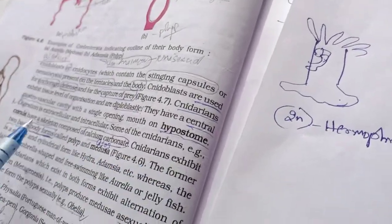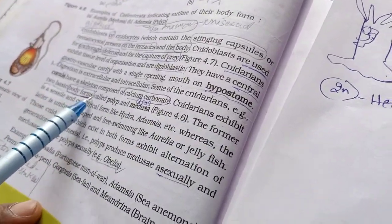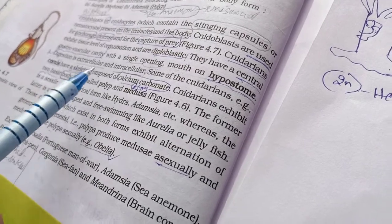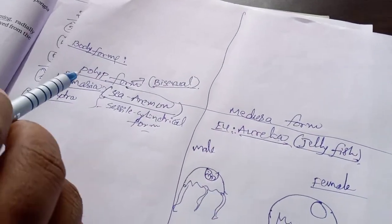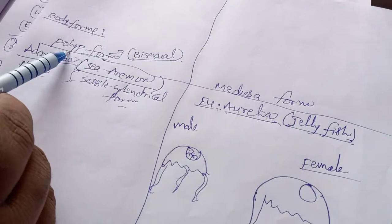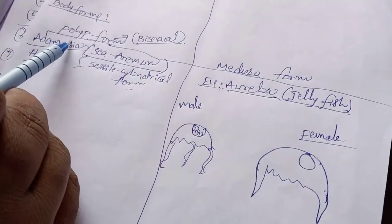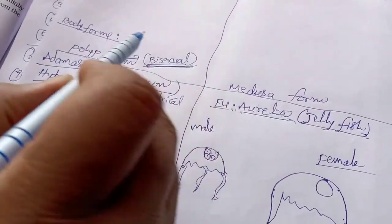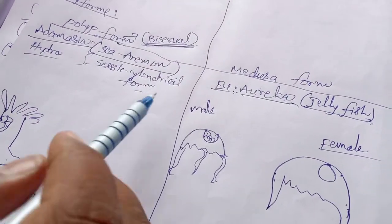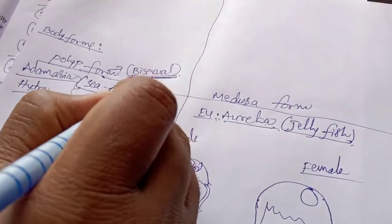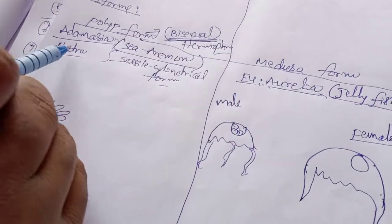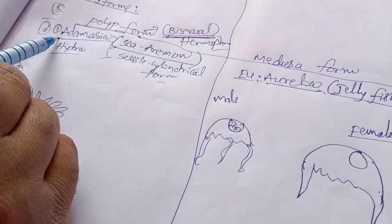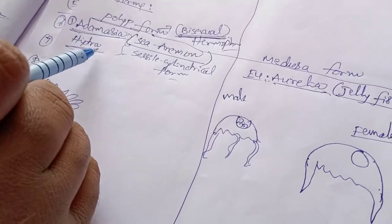Cnidarians exhibit two basic body forms: one is the polyp and another one is the medusa body form. Polyp is a bisexual form — bisexual means hermaphrodite. Examples for polyp are Adamecia and Hydra.